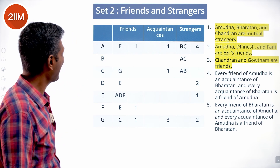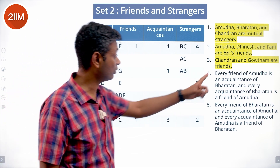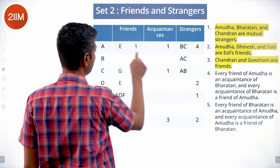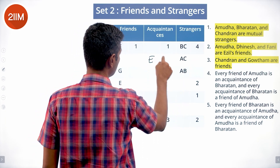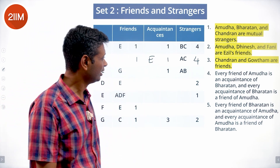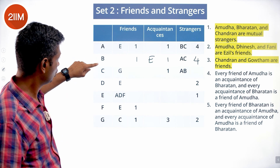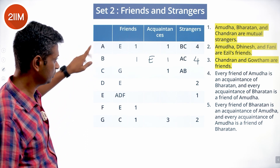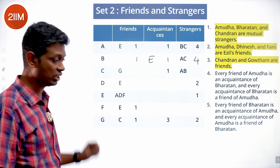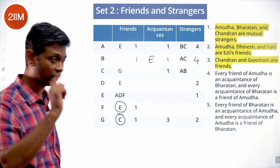Every friend of Amudha is an acquaintance of Bharatan, and every acquaintance of Bharatan is a friend of Amudha. So E should come in as Amudha's one friend. This means the friend count is one for Amudha and one for Bharatan — the numbers mirror. Now Amudha has one friend done. Bharatan has one friend, which is not A, not C, and not E since E is an acquaintance. Of D, F, G remaining, F and G are accounted for, so Bharatan's one friend must be D.